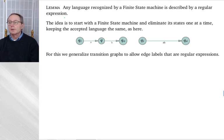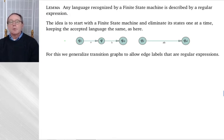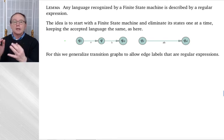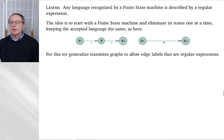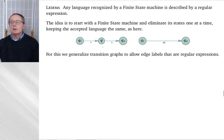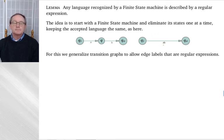The idea for the second half is to start with a finite state machine and eliminate states one at a time, keeping the accepted language the same. We generalize the transition graphs so that edges are labeled not just with members of the alphabet but with regular expressions. For example, if we eliminate a middle state Q between QI and QO, the new edge from QI to QO gets labeled AB — the concatenation of regular expressions A and B.